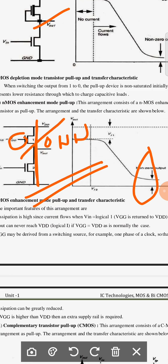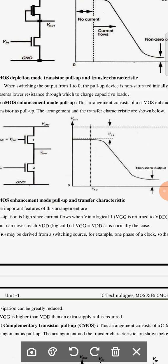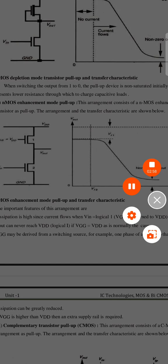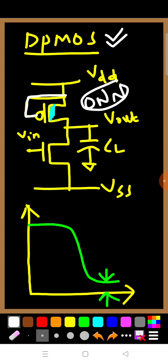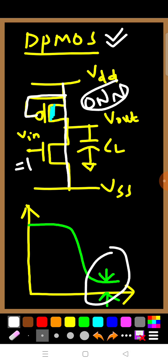Now let's discuss depletion mode PMOS as a pull-up device. Since it is a depletion mode PMOS, the gate and source are shorted together. Because of this, it is always in the on condition. When Vin equals one, both the pull-up and pull-down transistors are in the on condition, so there is a static current flow from Vdd to Vss, and the output never reaches zero. This also does not overcome the two main drawbacks.